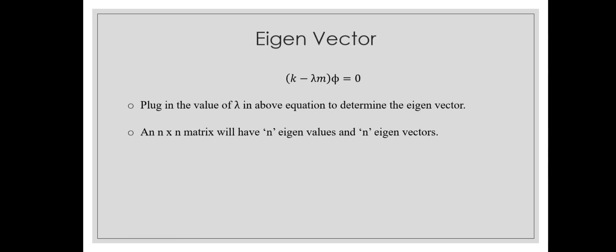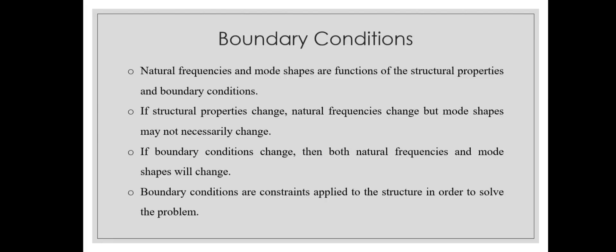Once we have the eigenvalue, we go back to k minus lambda m times phi equals zero. We know three terms — stiffness, mass, and eigenvalue — so we determine the eigenvector. An n by n matrix will have n eigenvalues and n eigenvectors. Natural frequencies and mode shapes are functions of structural properties and boundary conditions. If structural properties change, natural frequencies change but mode shapes may not necessarily change. If boundary conditions change, then both natural frequencies and mode shapes change.